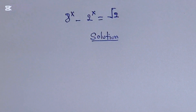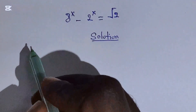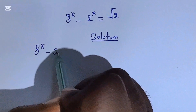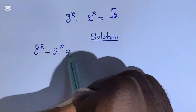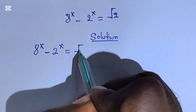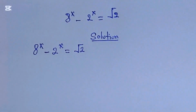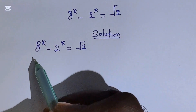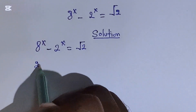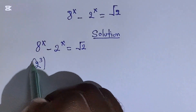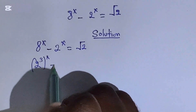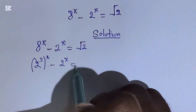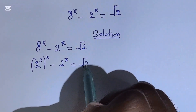So first thing is to copy what we have. We have 8 to the power of x minus 2 to the power of x, which is equal to square root of 2. Then this 8 is equal to 2 to the power of 3, okay? Then raised to the power x, then minus 2 to the power of x, which is equal to square root of 2.